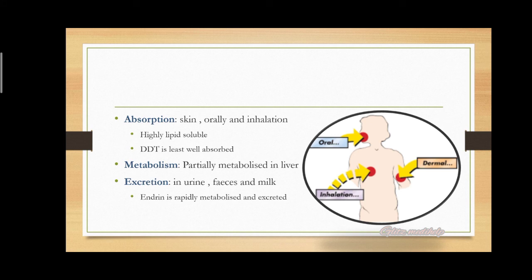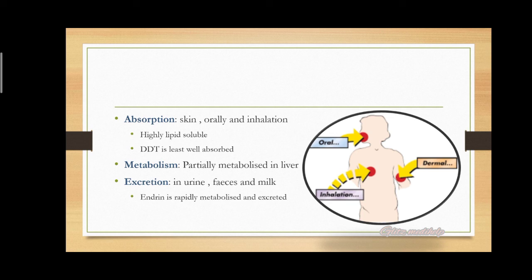Coming to absorption, metabolism, and excretion: all of these pesticides are absorbed through skin, orally, and via inhalation. These agents are highly lipid soluble. DDT is the least well absorbed. They are partially metabolized in the liver and directly excreted in urine, feces, and milk. Endrin is rapidly metabolized and eliminated and does not persist in the body tissues.